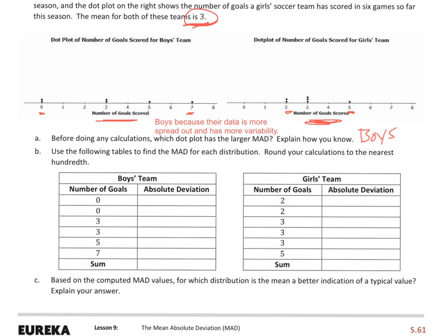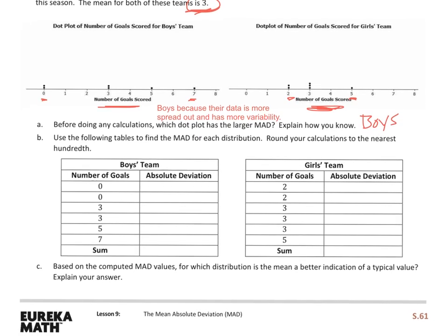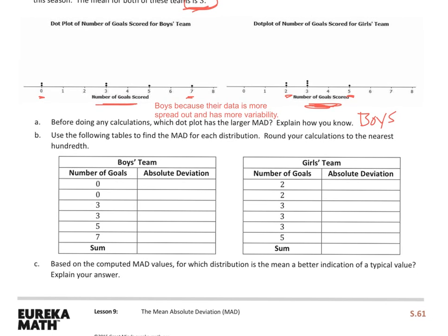Part B says, use the following tables to find the mean absolute deviation for each distribution. Round your calculations to the nearest hundredth. So, the first thing I have to do is find absolute deviation. And we know that deviation is how far away each point is from the mean, which would be 3. Those are done in negatives and positives. So, we're not looking at that. We're looking at absolute deviation.